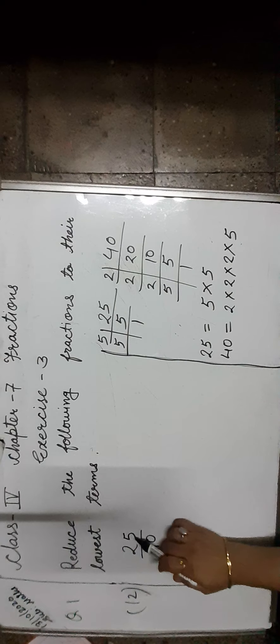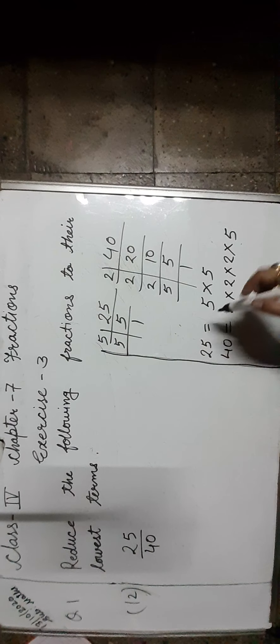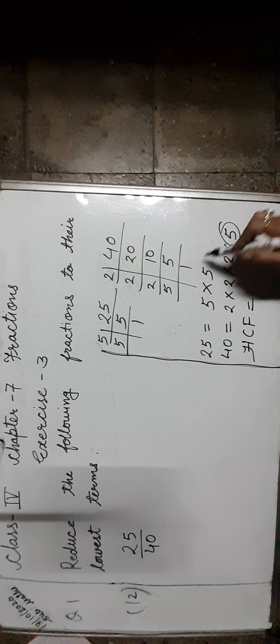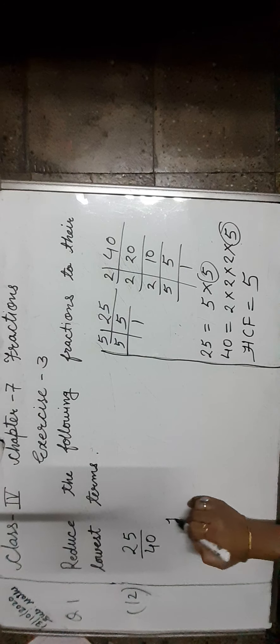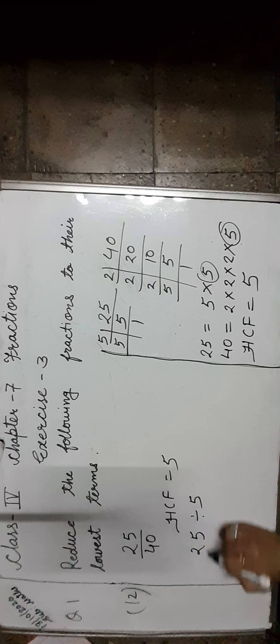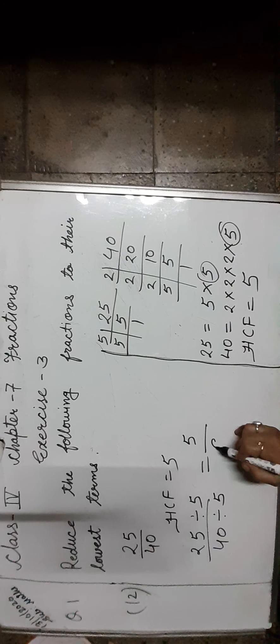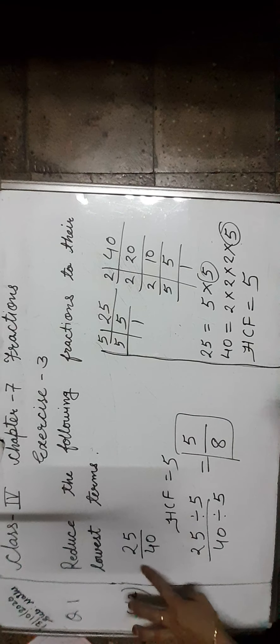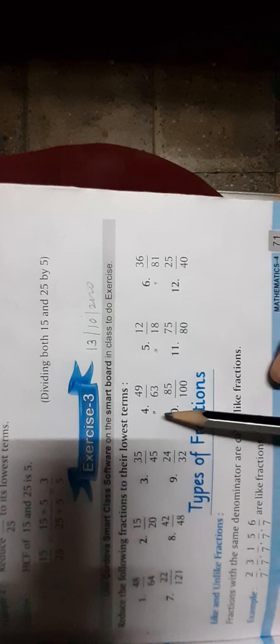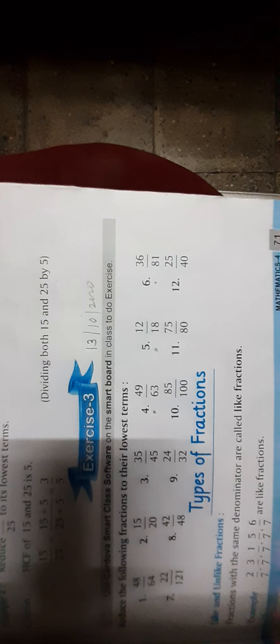Let us find the lowest term of 25 and 40. First, we find out the HCF of 25 and 40. The HCF, which means highest common factor, of 25 and 40 is 5. Now, your homework is problems 4, 5, and 6 of exercise 3. Do them in your homework copy.